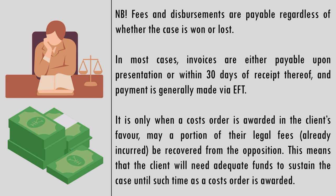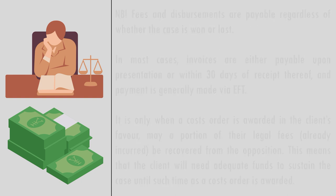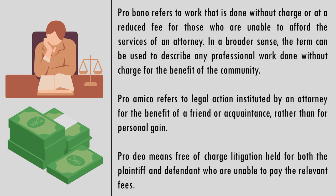There are, however, a few exceptions to this, such as matters taken on a pro bono, pro amico, or pro dio basis, or where a contingency fee agreement has been concluded between the attorney and client. Pro bono is a Latin term meaning 'for the public good' — it refers to work done without charge or at a reduced fee for those unable to afford an attorney. Pro amico means 'for a friend' — legal action instituted by an attorney for the benefit of a friend or acquaintance rather than for personal gain. Pro dio means free-of-charge litigation for both plaintiff and defendant who are unable to pay the relevant fees.